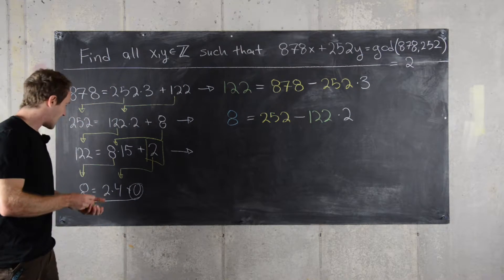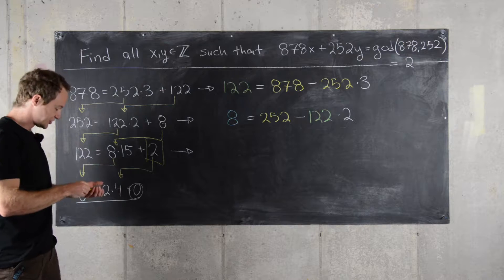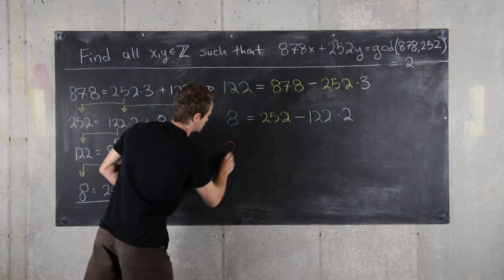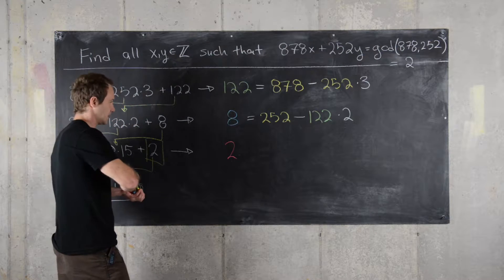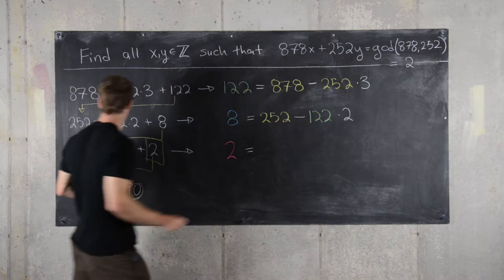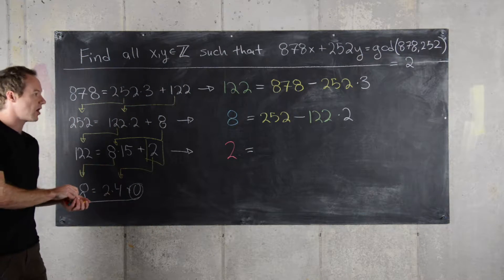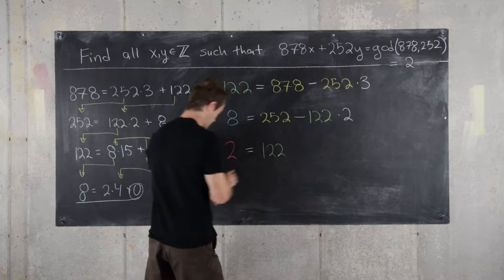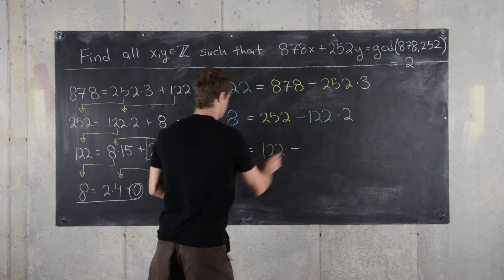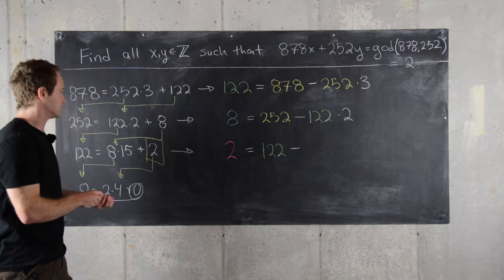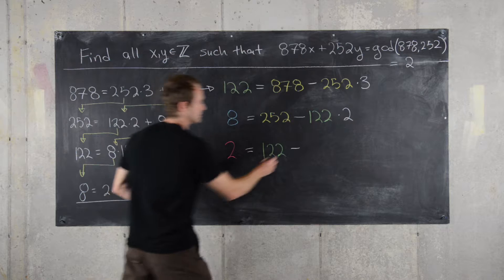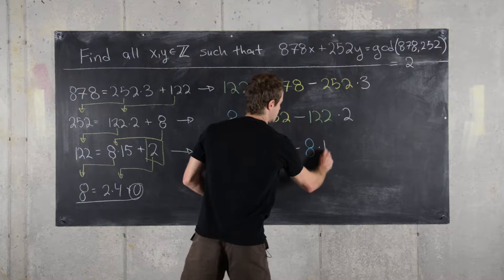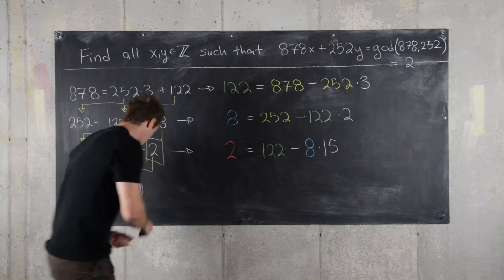And then finally we have 2. So 2 equals, let's see, what do we have there? We have 122 minus 8 times 15.